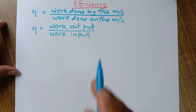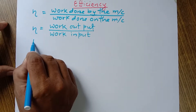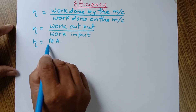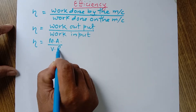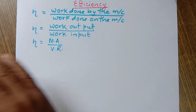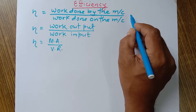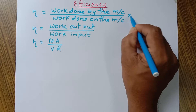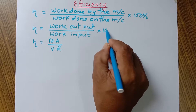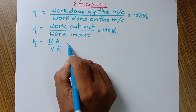Efficiency can also be defined as the ratio of mechanical advantage to the velocity ratio in a simple machine. In all three cases, efficiency is usually expressed in terms of percentage, so we multiply by 100.